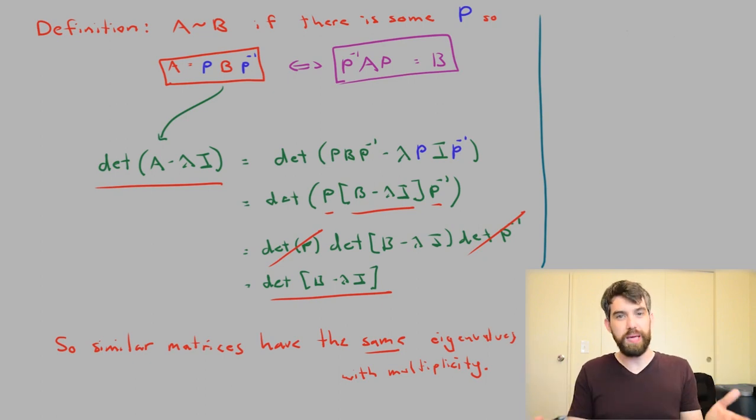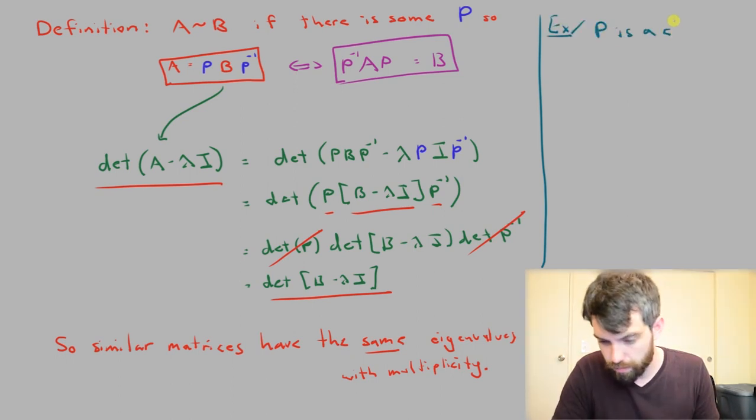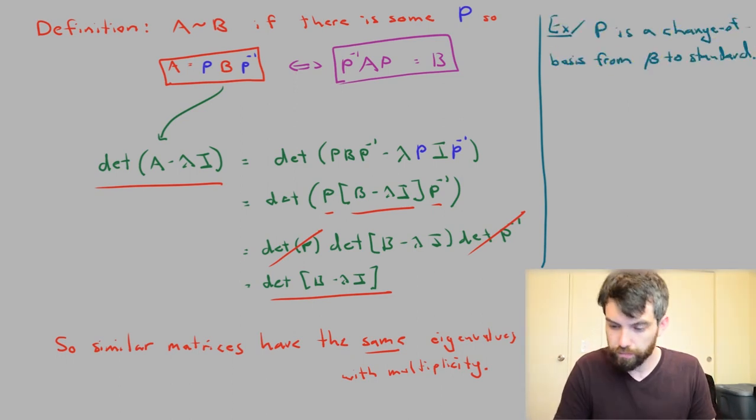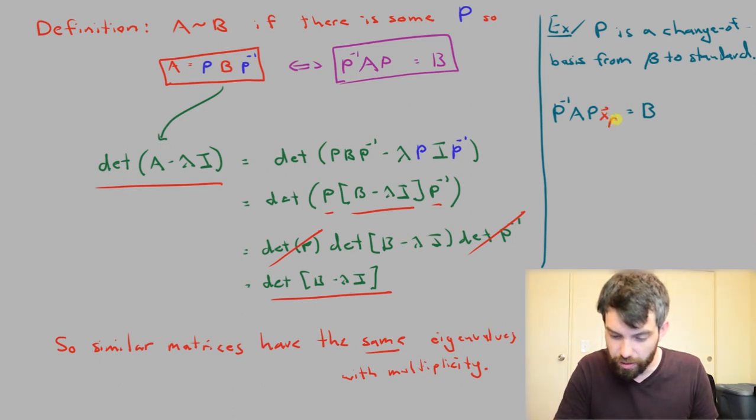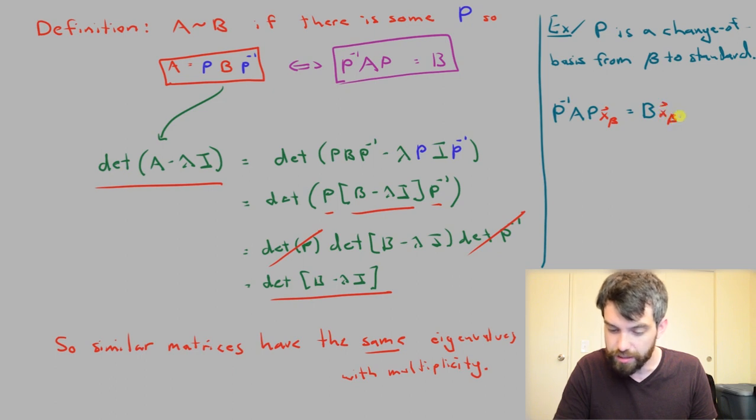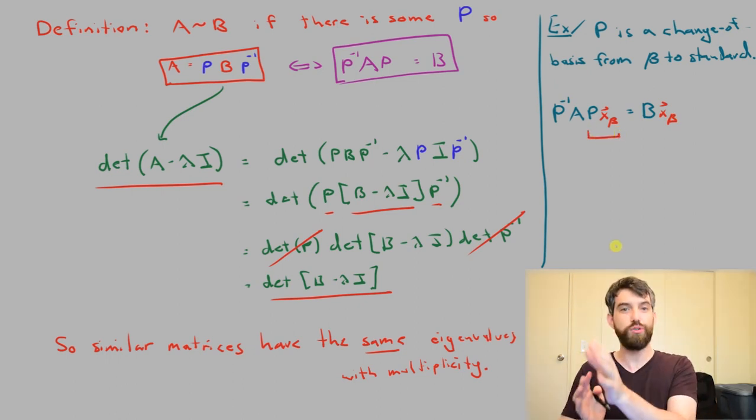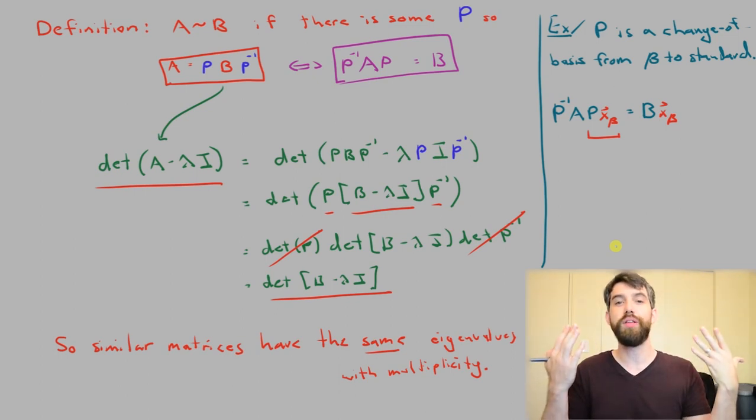Imagine you've got some basis B and you've got vectors x that are written in terms of that basis B. And then I want you to imagine that the matrix P here that we're specifying, that this P matrix is the change of basis that takes your vector written in the B basis and puts it into the standard basis. So then if I take one of these expressions, the P inverse AP, and I'm going to say that this equals B. If I apply this particular matrix to some vector x that's being written in that B basis, then on the left hand side, what we really have is three different things.